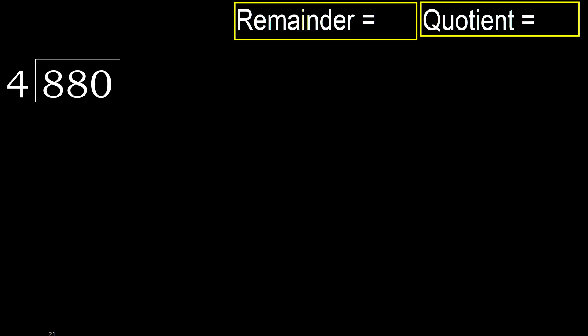880 divided by 4. 8 is not less, therefore start with 8. 4 multiplied by which number is nearest to 8 but not greater? 4 multiplied by 3 is 12, it's greater. 4 multiplied by 2 is 8, it's not greater. Subtract 8 minus 8 equals 0.